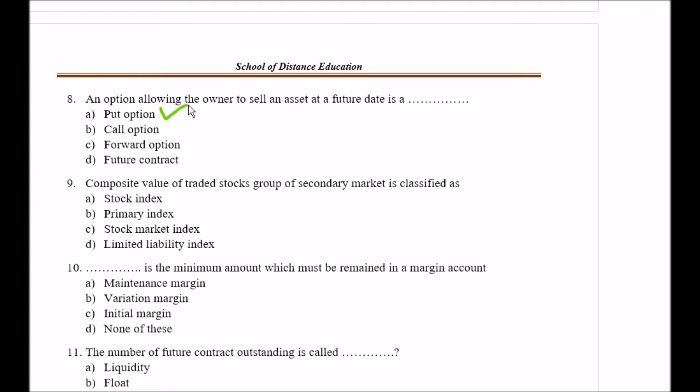Here you are at understanding level, knowledge level check. Question number nine: Composite value of traded stock group of secondary market is classified as Option A stock indexes, Option B primary indexes.